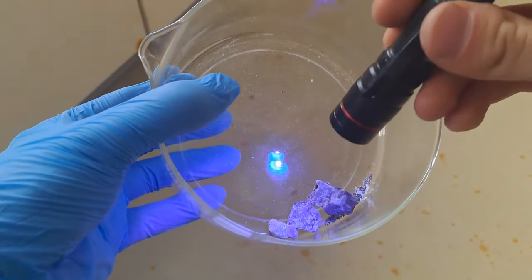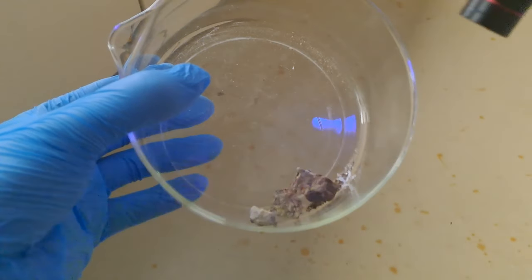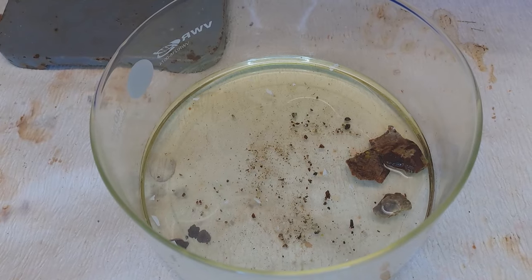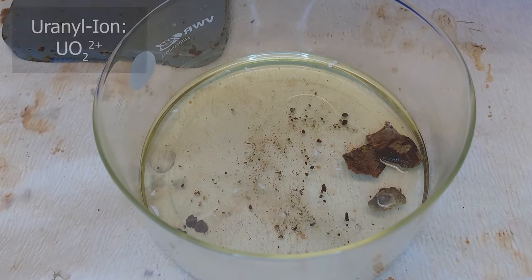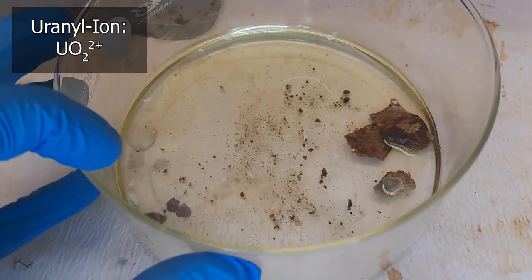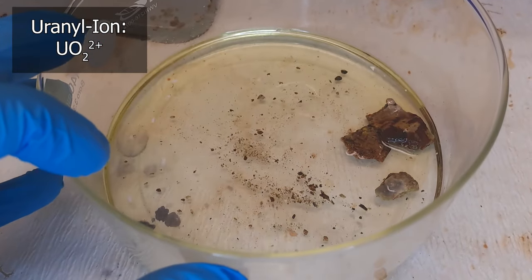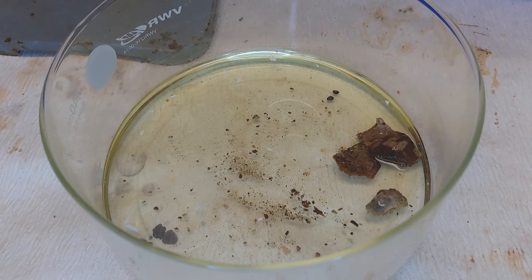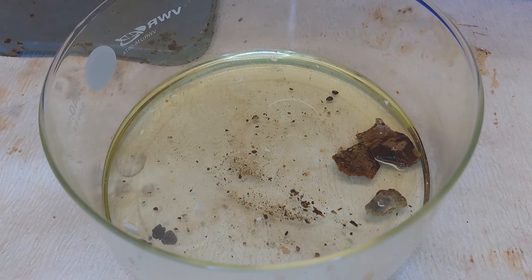Some uranium minerals have an interesting property of fluorescence, but these are not the prettiest ones, so I don't mind dissolving them. What do we use for that? Concentrated hydrochloric acid. You can immediately see the solution turning yellow. This is due to uranium in the oxidation state plus six as dissolved uranyl ions. The goal of this experiment is to extract the polonium from the mineral as simple as possible. Therefore, we don't even grind it. Just let it sit for two days in the hydrochloric acid.